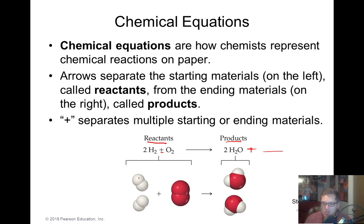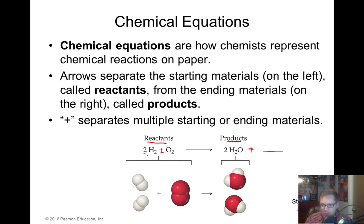When you've got two different things on one side — like hydrogen and oxygen reacting with one another — we separate them with a plus sign. Notice the subscripts versus the coefficients: coefficients are the numbers that go in front, and subscripts are the little numbers off to the bottom on the side. So here with hydrogen, the subscript two means we've got two hydrogens per molecule, and the coefficient tells us how many sets we have.